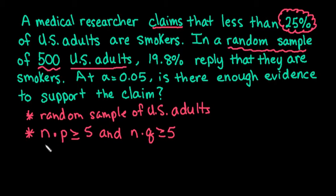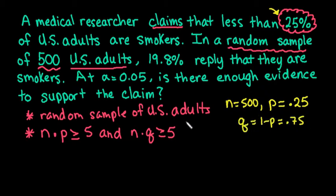In order to find this one, we do need to find our n, which is 500. We do have to find p, which always comes from the claim, and we write it as a decimal. And then q always comes from 1 minus p, so we would have 0.75.